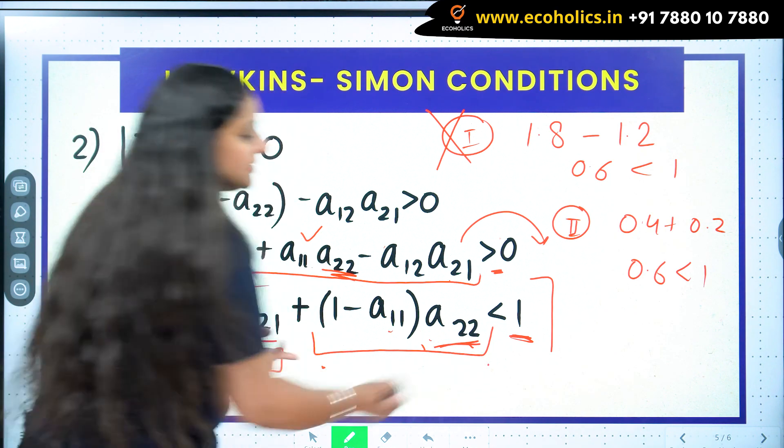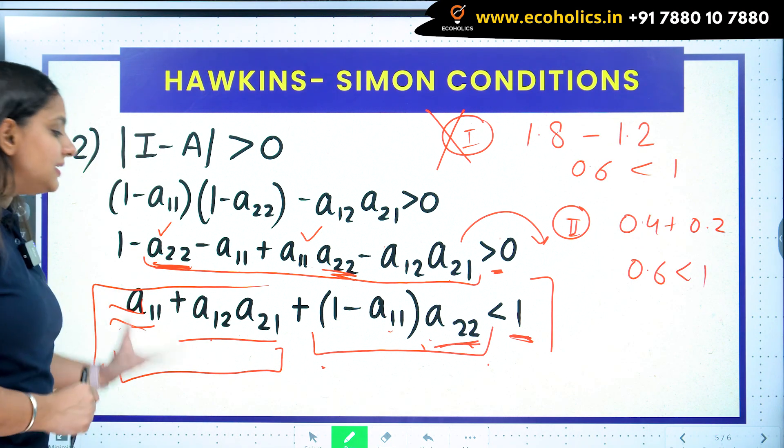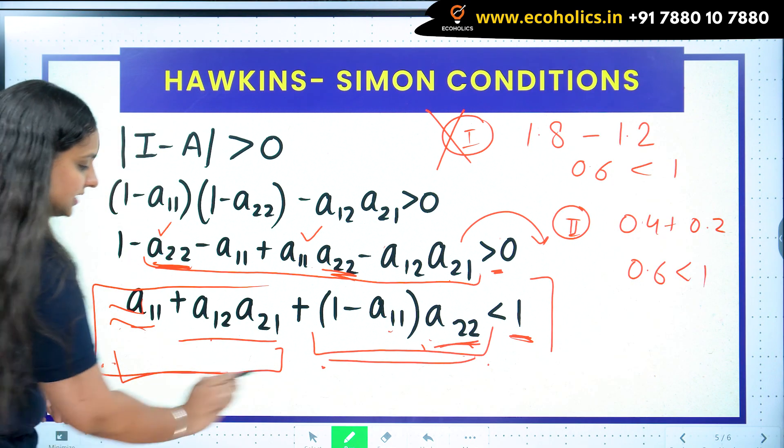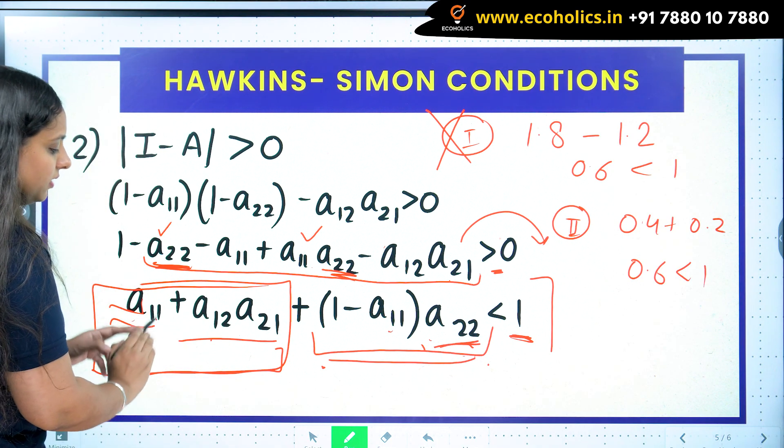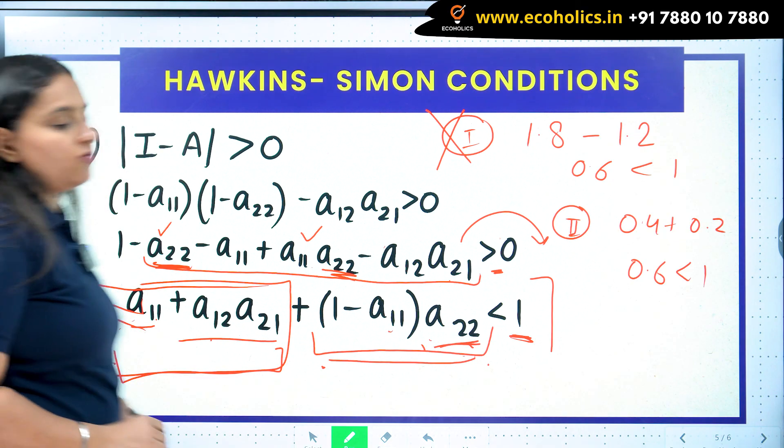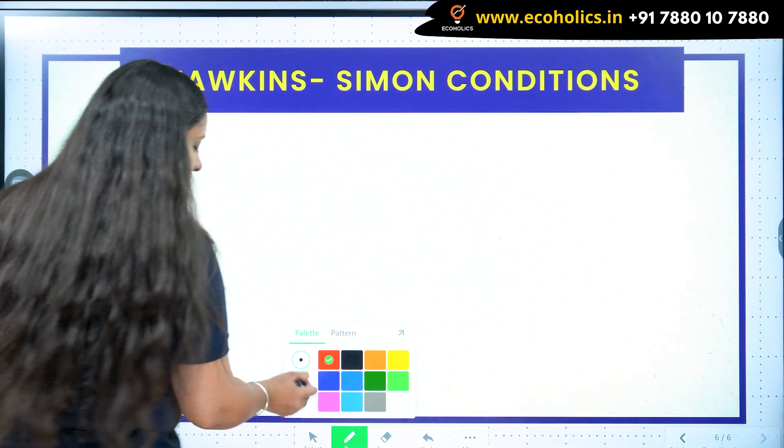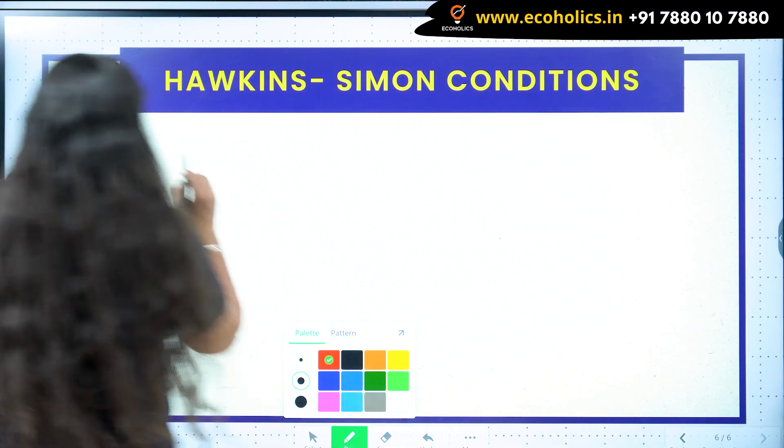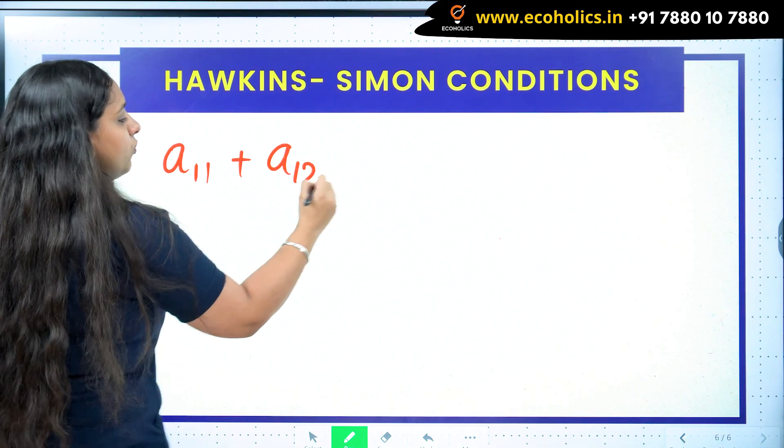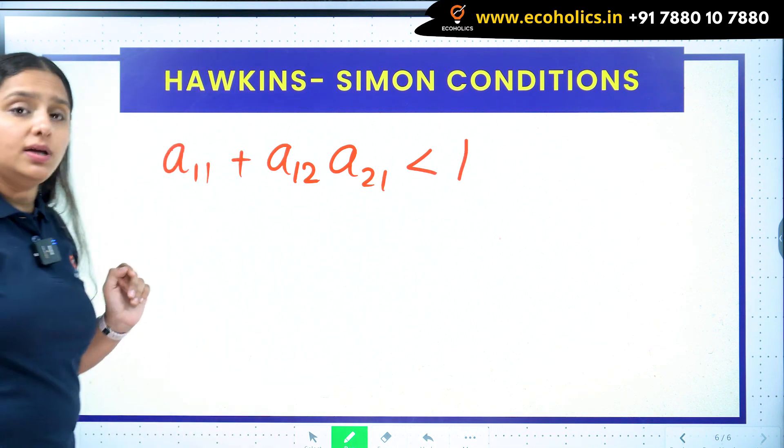So using the same approach, I know this is a small number. Using the same approach, can I say now that a_11 + a_12*a_21 is going to be strictly less than 1? Yes, of course I can say that. I will write a_11 + a_12*a_21 strictly less than 1. What does it mean now? We have written it, but what does it mean?